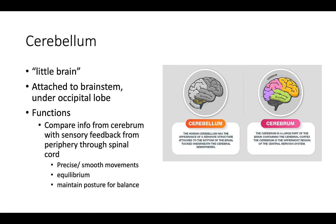The cerebellum is sometimes called the 'little brain.' It is attached to the brainstem underneath the occipital lobe and is visually distinct from the cerebrum. It functions to compare sensory feedback from the periphery through the spinal cord and helps coordinate precise, smooth movements, equilibrium, and posture for balance.